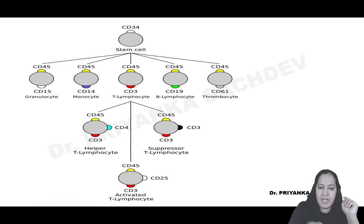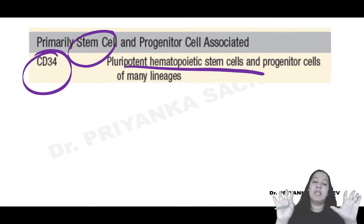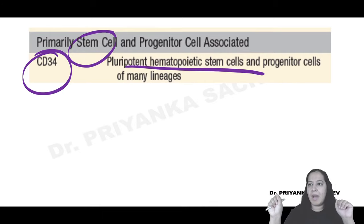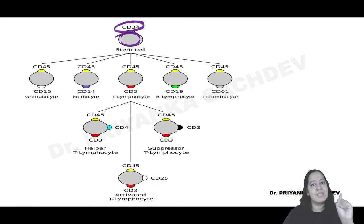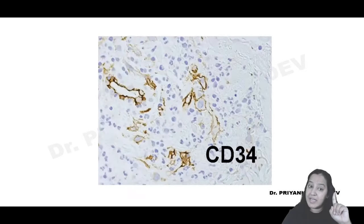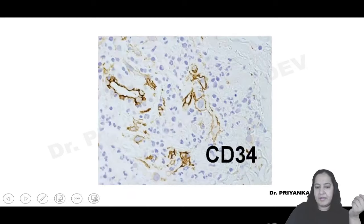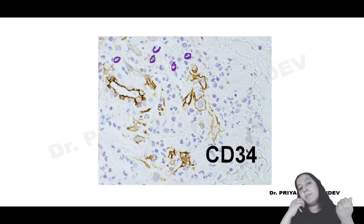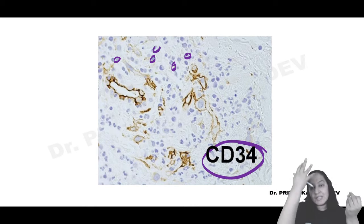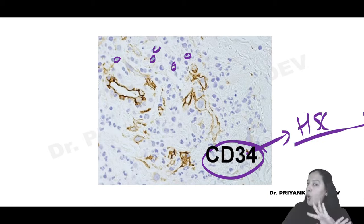CD34 is present only on hematopoietic stem cells - no other cells are CD34 positive. In clinical scenarios, if a cell in bone marrow is CD34 positive and coming into blood, they are talking about leukemia - stem cells are entering blood. Using antibodies against CD34, in a bone marrow biopsy slide you can identify which cells are hematopoietic stem cells because only those cells will pick up the CD34 marker.